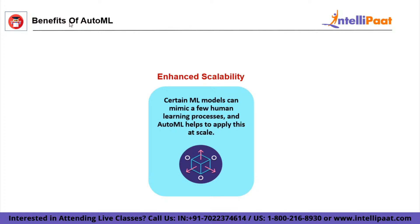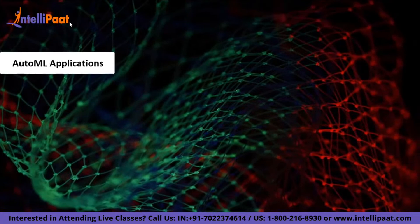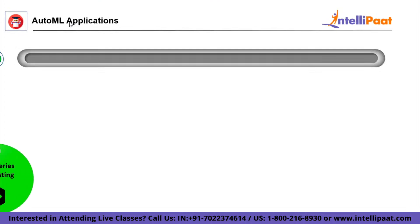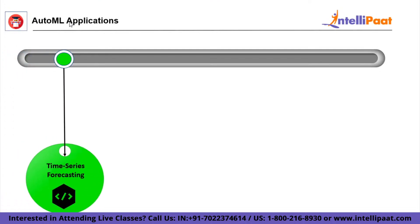Now let's look at where AutoML is applied. The first application is Time Series Forecasting. Data scientists and machine learning engineers use Time Series Forecasting to predict future events by analyzing data observed through time. But Time Series Forecasting is a complicated and time-consuming process. AutoML automates the entire process, including hyperparameter tuning, feature engineering for discovering predictive signals, and model selection.